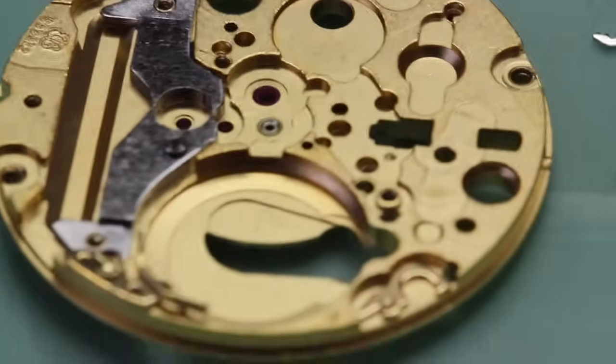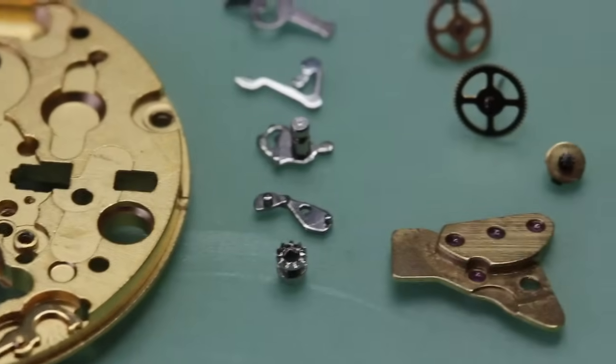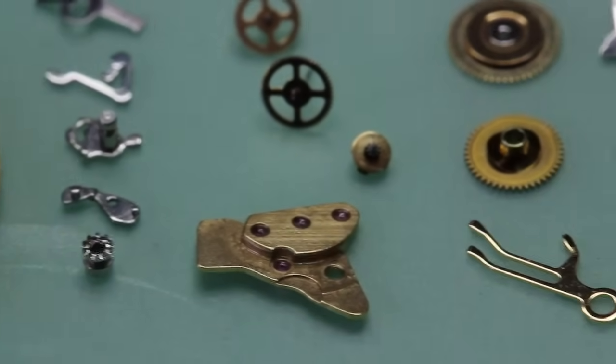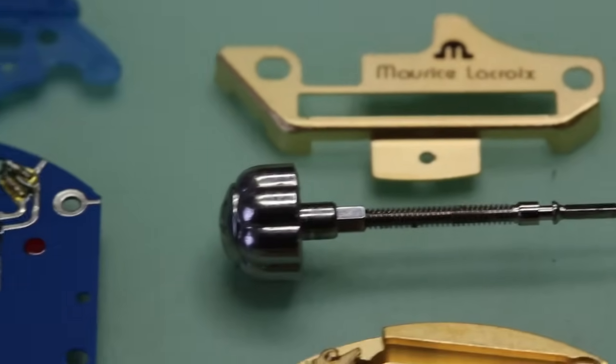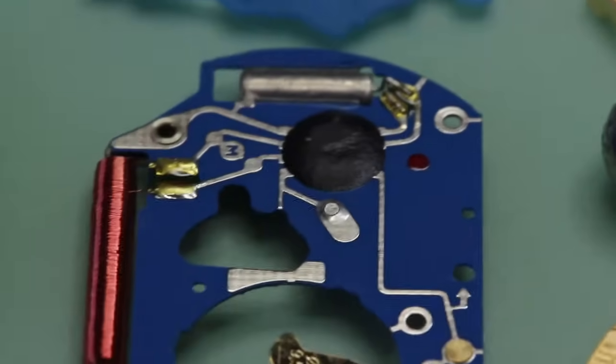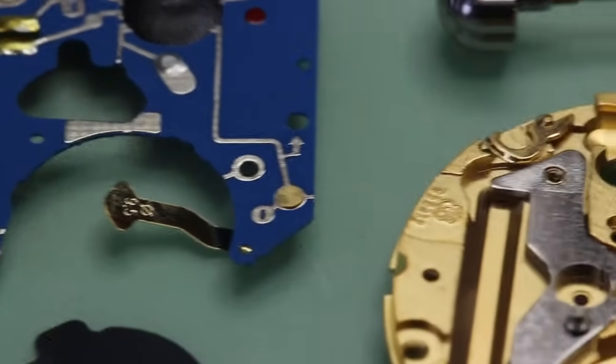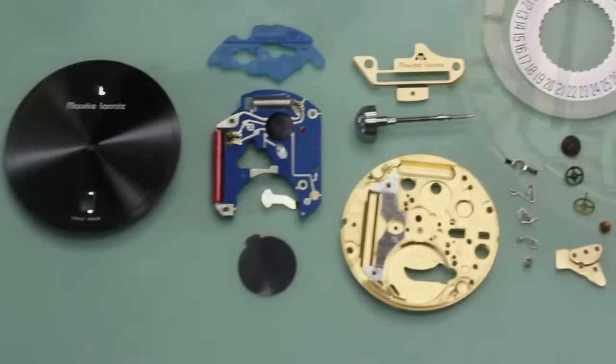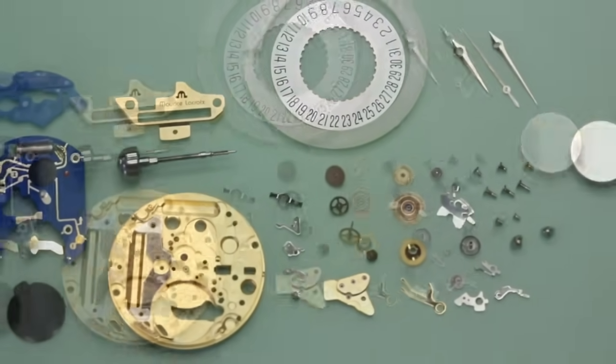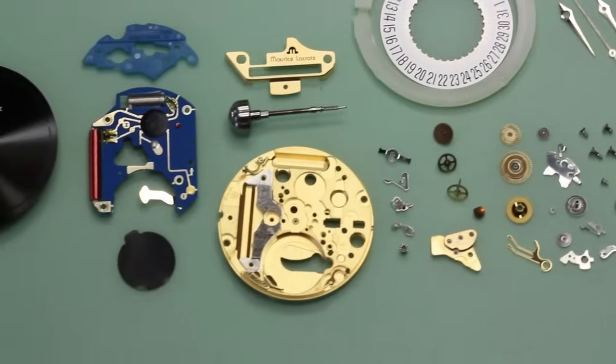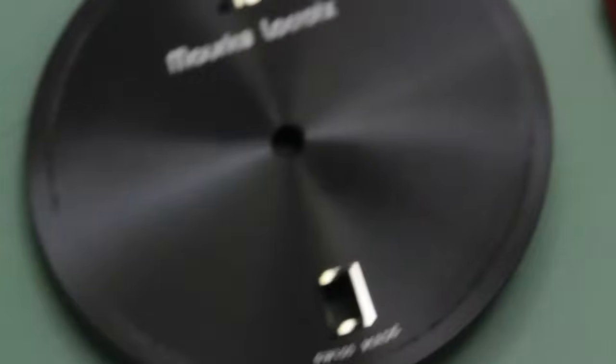And now the watch is stripped completely and ready for cleaning. Most of the parts on this watch can actually go through the cleaning machine with the obvious exceptions of the circuit board. I wouldn't advise putting the stepping motor through the cleaning machine. Obviously it's a magnet and it will attract every single piece of metal particle in the machine.